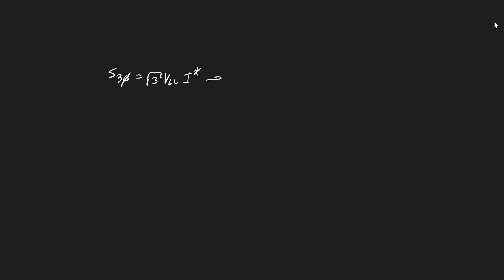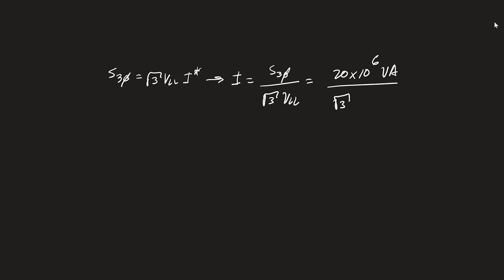Dropping the conjugate since we're only concerned about magnitude, I can solve for current: I = S₃φ divided by (√3 × V_LL). Plugging in our values: 20 MVA (20 × 10⁶ VA) divided by √3 times 13.8 kV (13.8 × 10³ V). The voltage units cancel out, and if I calculate this I get 837 amps.